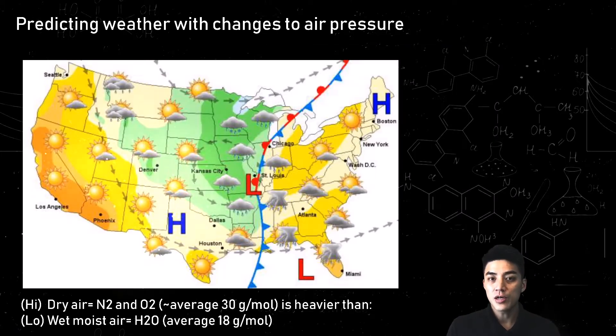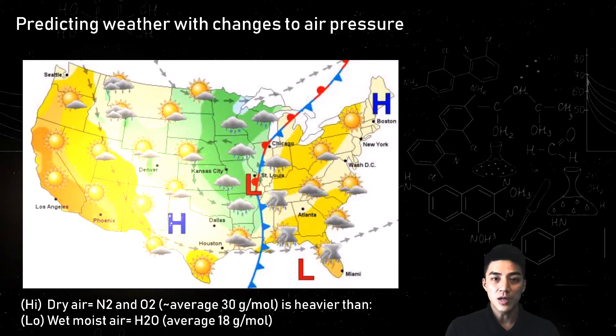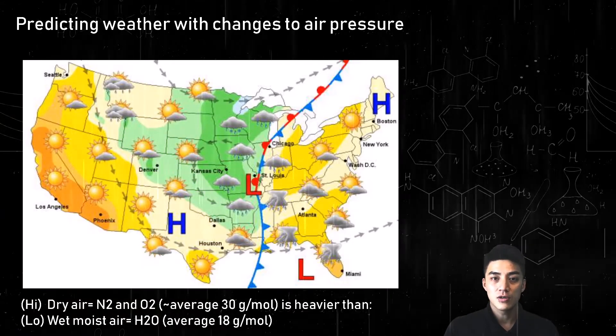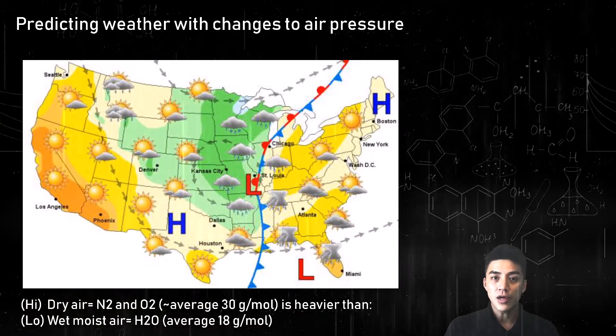As you can see on the weather map, along the high pressure zones, you see clear sunny skies, and along the low pressure fronts, you have cloudy, rainy weather.